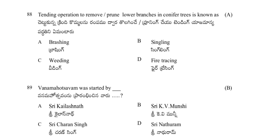The tending operation to remove or prune lower branches in conifers is known as: brashing, singling, weeding, or fire tracing. The answer is brashing — it refers to low pruning in conifers.